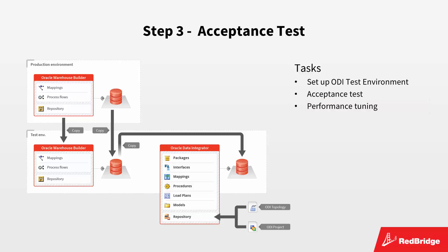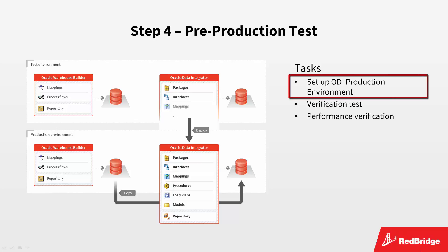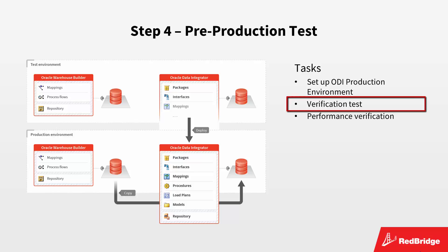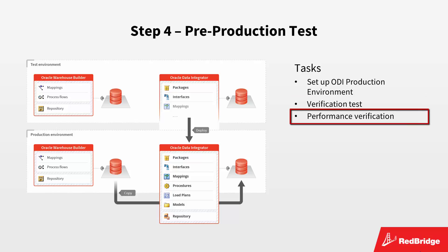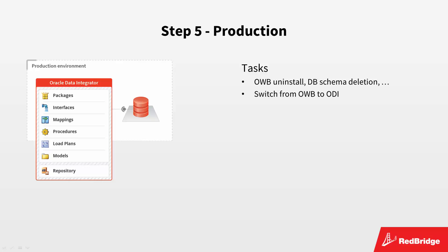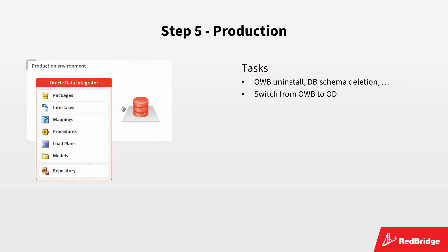When this step ends successfully, we move on to the pre-production step. During this step, we set up a parallel pre-production environment to ensure the correctness of the new ODI project in the production environment — for example, to verify the configuration, the privileges, missing patches, etc. If required, some fine-tuning of the new ODI project performance can still be done at this stage. The last step in the conversion process is the production step. In this step, we will remove the original OWB project and all its dependencies from the production environment and switch the scheduling tool to the new ODI project.